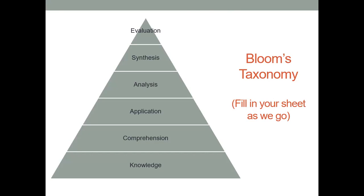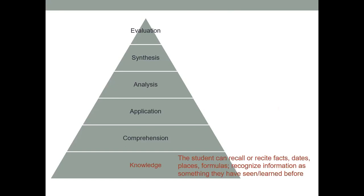So knowledge, bottom of the pyramid at the knowledge level, the student can recall or recite facts, dates, places, formulas, recognize information as something they have seen or learned before. So, for instance, if I am teaching about the Declaration of Independence at the knowledge level, the student could literally tell me, what date is associated with the Declaration of Independence? Or list one person who signed the Declaration of Independence or tell me one tenant from the Declaration of Independence. It's the bottom of the pyramid. They've seen it before. They say, oh, yeah, I saw that at some point. I can tell you some basic facts about it. I think the number 1776 comes to mind, basic stuff. That's the knowledge level.